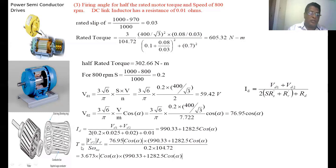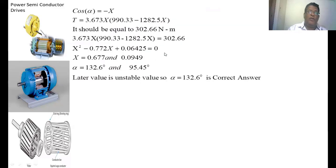The torque developed in the induction motor = Vd2·Id/(S·ωs). We know the value of Id and Vd2. Substituting all values and simplifying, we get T = 3.673X(990.33 - 1282.5X), which should equal 302.66 N-m. Solving this equation where cos(α) = -X, we get X² + 0.06425X - 0.0949 = 0. Solving for X: α = 132.6° and 95.45°. The later value is unstable, so α = 132.6° is the correct answer for 800 RPM at half-rated torque.